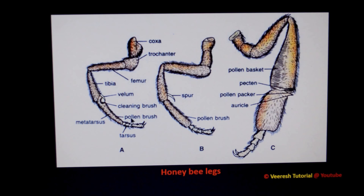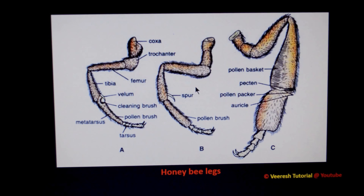A pollen brush is also present on the foreleg, useful to collect pollen from the head and mouthparts. The middle leg also serves as a pollen brush to collect pollen from the middle part of the body. A tibial spur is present at the distal end of the middle tibia, mainly useful to loosen the pollen pellets from the pollen basket. This spur also helps to clean wings and spiracles.